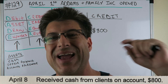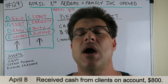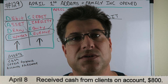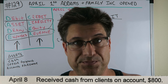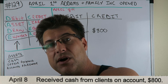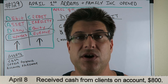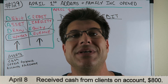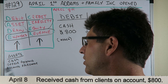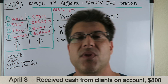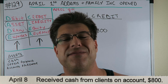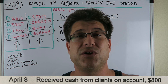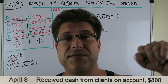Going back to our first journal entry, we had a capital contribution that included an accounts receivable of $1,500. Someone paid us $800 of that, so our accounts receivable is decreasing — going from $1,500 down to $700. Accounts receivable is an asset because it provides a future economic benefit: they owe us cash, and that cash will benefit our business.